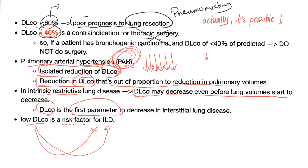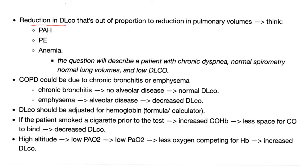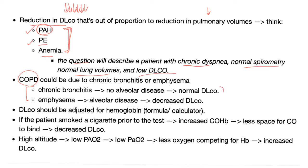If you see a reduction in DLCO that is out of proportion to the reduction in pulmonary volumes, think first of pulmonary arterial hypertension, pulmonary embolus, or anemia. On your exam, the question will describe a patient with chronic dyspnea, lung symptoms, normal spirometry, normal lung volumes, and low DLCO — choose one of those three diseases. Remember: in COPD, chronic bronchitis has no alveolar disease and therefore normal DLCO, while emphysema has alveolar disease and therefore decreased DLCO.